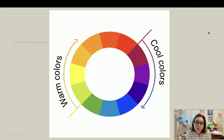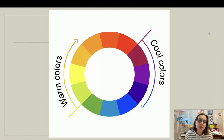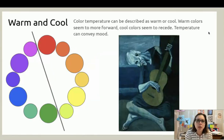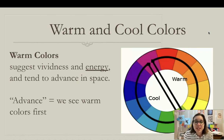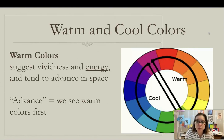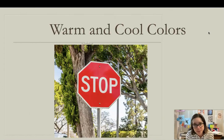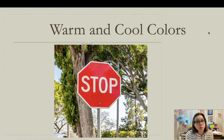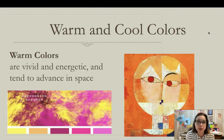The last thing is color temperatures: warm colors and cool colors. When you divide the color wheel in half, you end up with warms and cools. Warm colors suggest vividness and energy and tend to advance in space — our eyes see warm colors first. Think about stop signs: they're red because they stand out. If they were gray or blue, we'd likely drive right through the intersection.